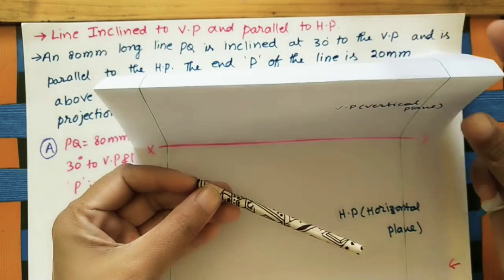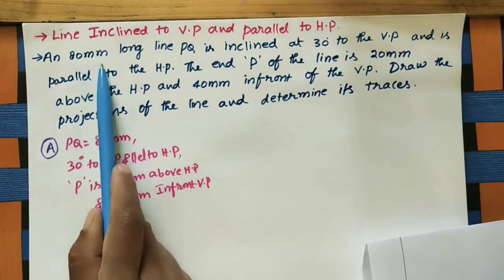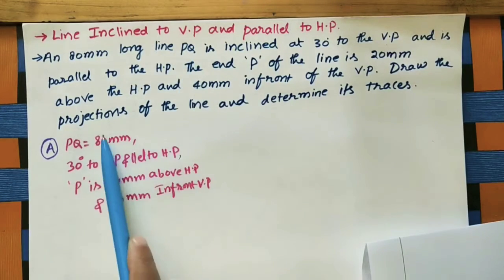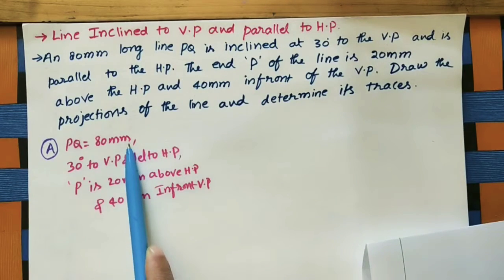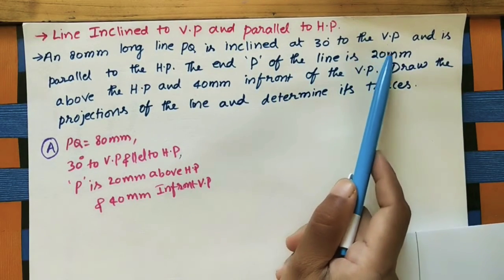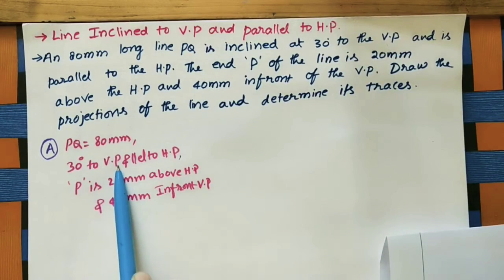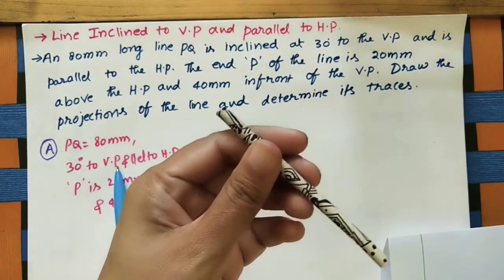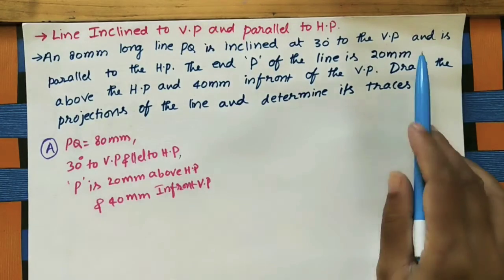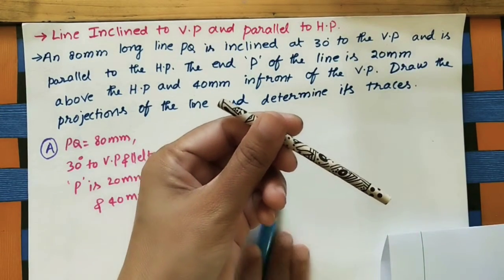For drawing the projections, take the given data: an 80 mm long line PQ. This line is inclined at 30 degrees to the VP, and is parallel to HP.